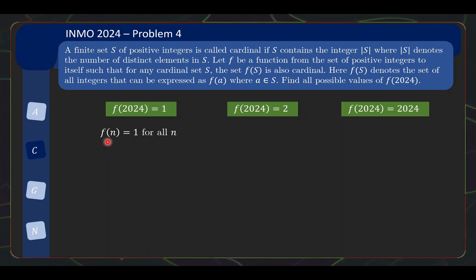So for the first case, it's quite obvious, the function f(n) equals to 1 for all n is a valid function. Because no matter what cardinal set you start with, you will be mapped to the set that contains just the element 1, which is cardinal.